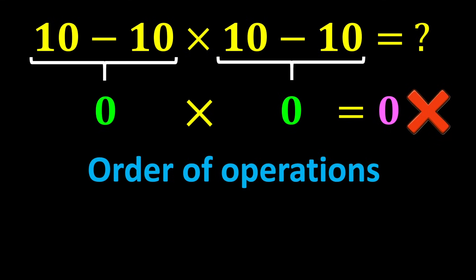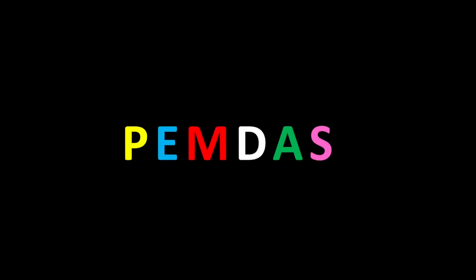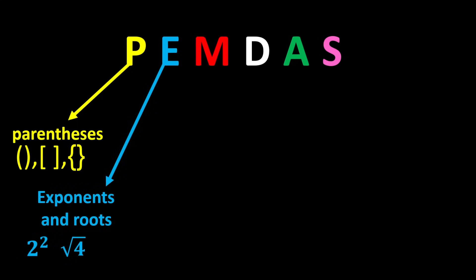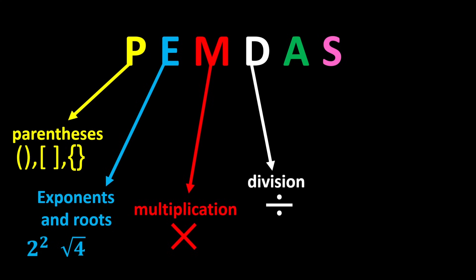The correct order of operations is known by a short acronym called PEMDAS. P stands for parentheses, E stands for exponents and roots, M stands for multiplication, D stands for division, A stands for addition, and S stands for subtraction.